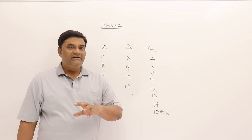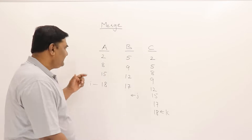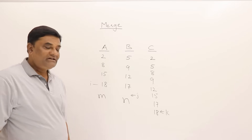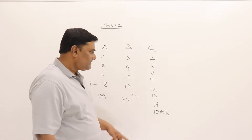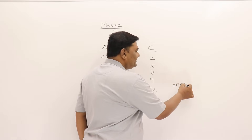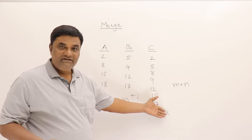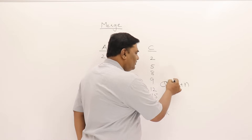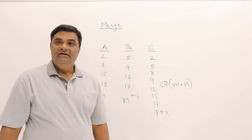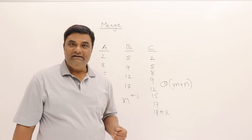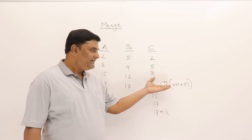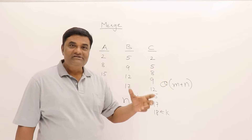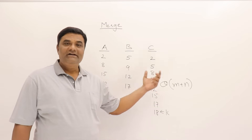The key property of merging is that if two lists are already sorted, the result is also sorted. Now let's look at the time taken. If list A has M elements and list B has N elements, then list C will have M+N elements. Since we compare and write each element once, the time taken is Theta(M+N). This Theta(M+N) notation has essentially become the standard notation for merging.